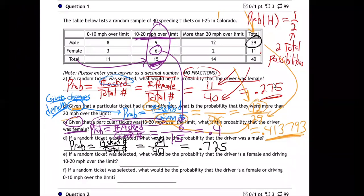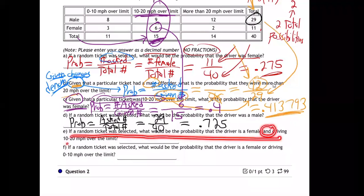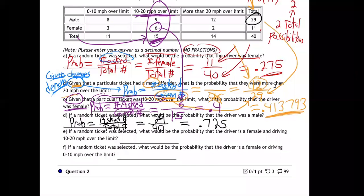You've got to watch — is it a given question or is it not? On to part E. If a random ticket was selected, what would be the probability the driver is female and driving 10 to 20 over the limit? Now we have an and question. Is there anything given on E? No given on E.